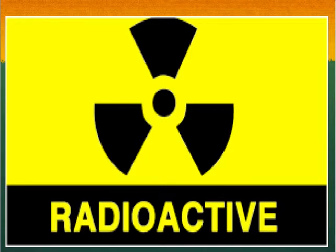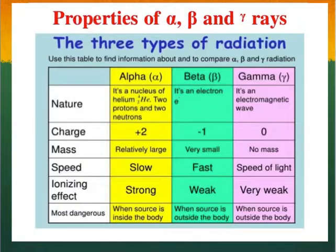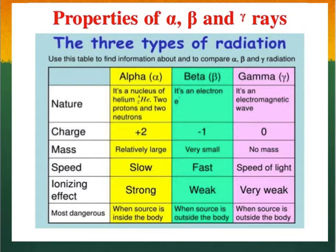Radioactivity refers to the particles which are emitted from nuclei as a result of nuclear instability. Because the nucleus experiences intense conflict between the two strongest forces in nature, it should not be surprising that there are many nuclear isotopes which are unstable and emit some kind of radiation.